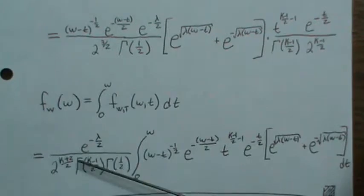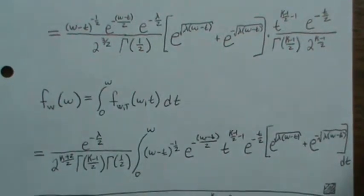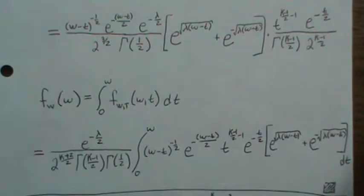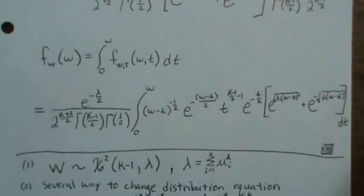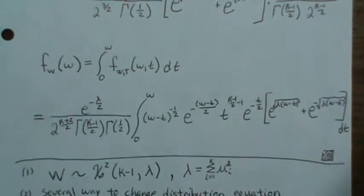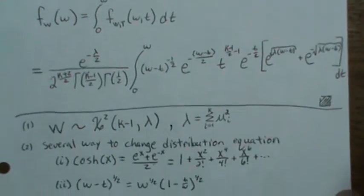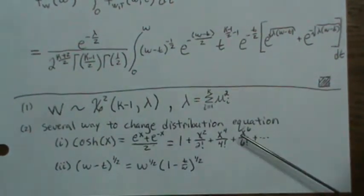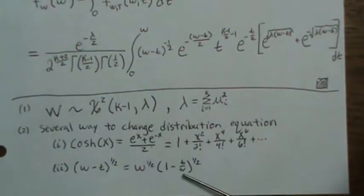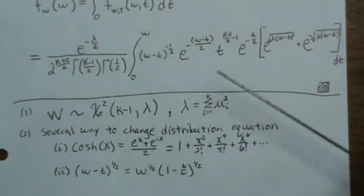I said this is the density of a non-central chi-square with k minus 1 degrees of freedom with non-central parameter lambda, and at the end of it I said people do some manipulation and can change this to a mixture of chi-square distribution with Poisson weights.